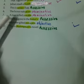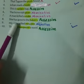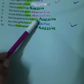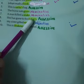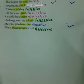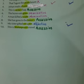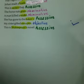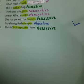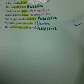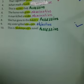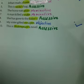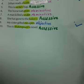'A man killed a snake' — who killed a snake? The man — nominative case. 'She has gone to the baker's' — apostrophe and 's' with baker, so this is possessive case. 'My sister gifted me a pen' — 'pen' is the direct object and 'me' is the indirect object, hence objective case. 'Shakespeare's novel' — possession shown, so possessive case.